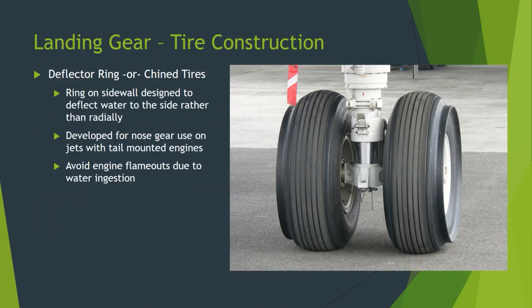Nose tires on aircraft often have a chine or deflector ring built into them — an extra bit of rubber molded on the outside. You must be careful when installing these that the deflector ring faces outward. When this tire goes through water, the chine deflects water outboard rather than allowing it to travel up and inward where it could be ingested into engines — either tail-mounted engines or wing-mounted engines. The deflector ring pushes water up and out to the side, helping prevent engine flameout especially on takeoff.